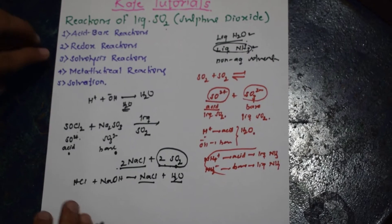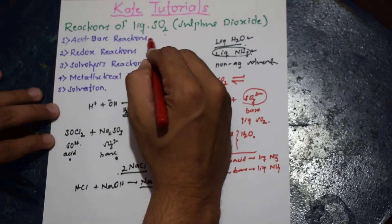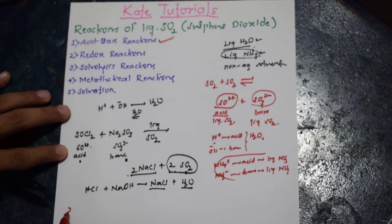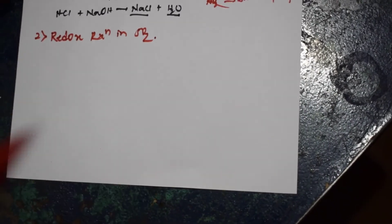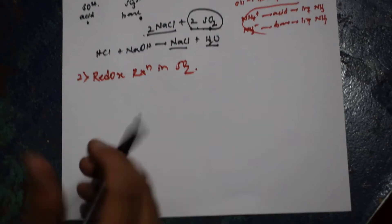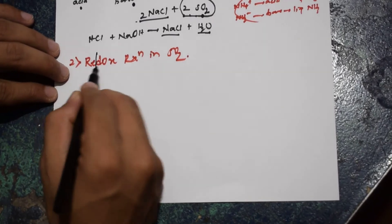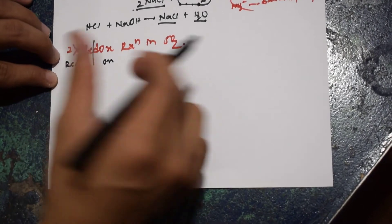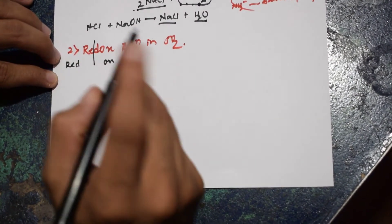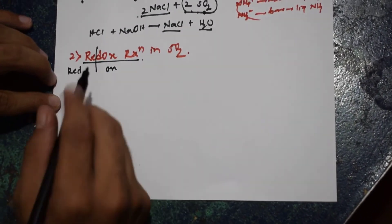Next, we shall discuss about redox reaction in liquid sulfur dioxide. The first reaction was acid-base; the second one is redox. RE stands for reduction and OX stands for oxidation. Both oxidation and reduction take place in the same reaction — that is nothing but a redox reaction. We will see how it occurs in sulfur dioxide.